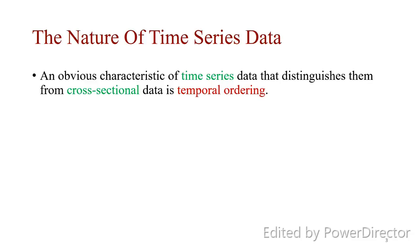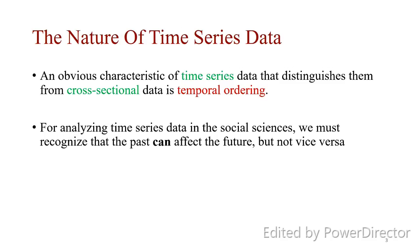The characteristic of time series data that distinguishes them from cross-section data is temporal ordering. When we are talking about time series, we can only have a single observation or realization at a moment of time. When we are talking about cross-sectional data, we are disregarding time — we are only focusing on aspects like individuals — but we are not looking at each and every individual over time.